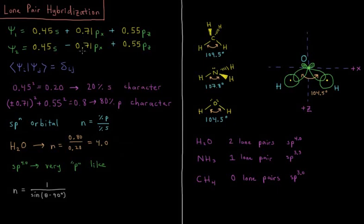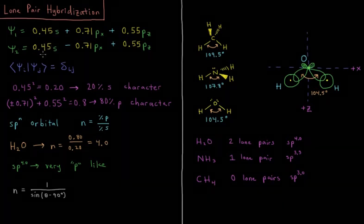Those orbitals are going to be normalized and orthogonal to one another. And if you'll notice, what we end up getting here is these coefficients squared determine the character on each of the orbitals. So we have 0.45 squared is 0.2, or 20% S character. Because remember, the wave function squared gives you the density, gives you the amount that the molecular orbital is in that individual atomic orbital.